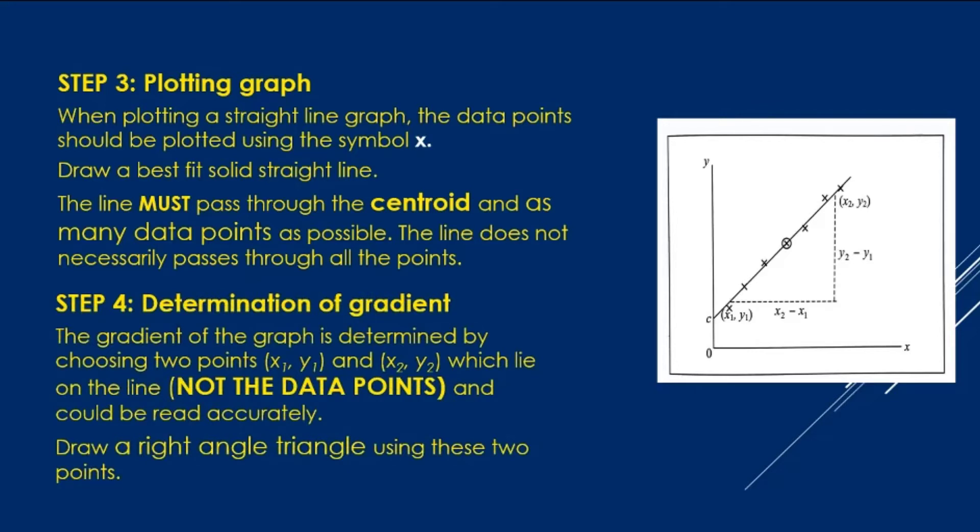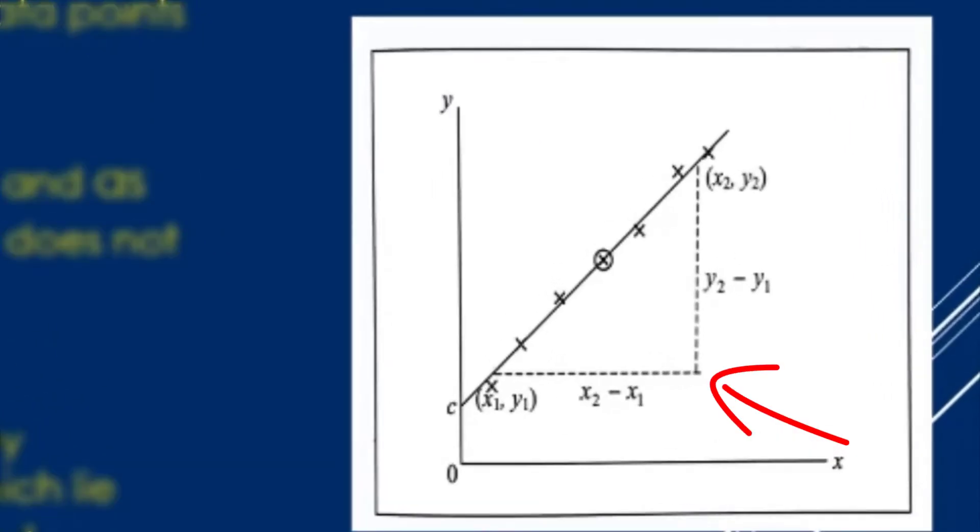Step 4: Determination of gradient. The gradient of the graph is determined by choosing two points, x1 y1 here and x2 y2 here, which lies on the line. Not choose the data points, and could be read accurately. Draw a right-angled triangle using these two points.